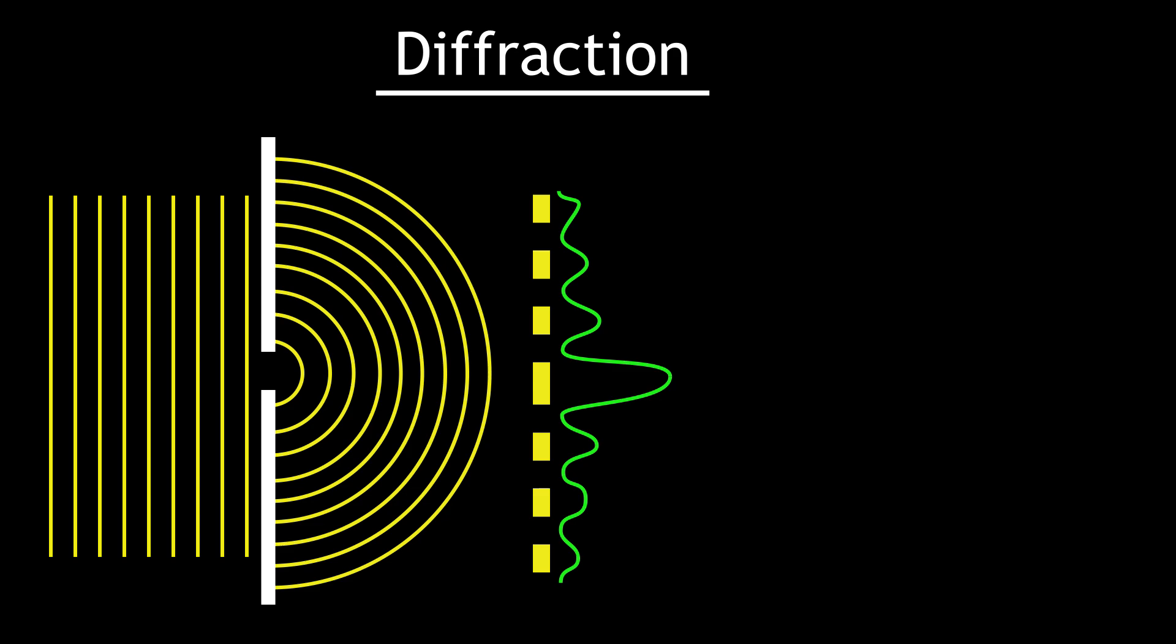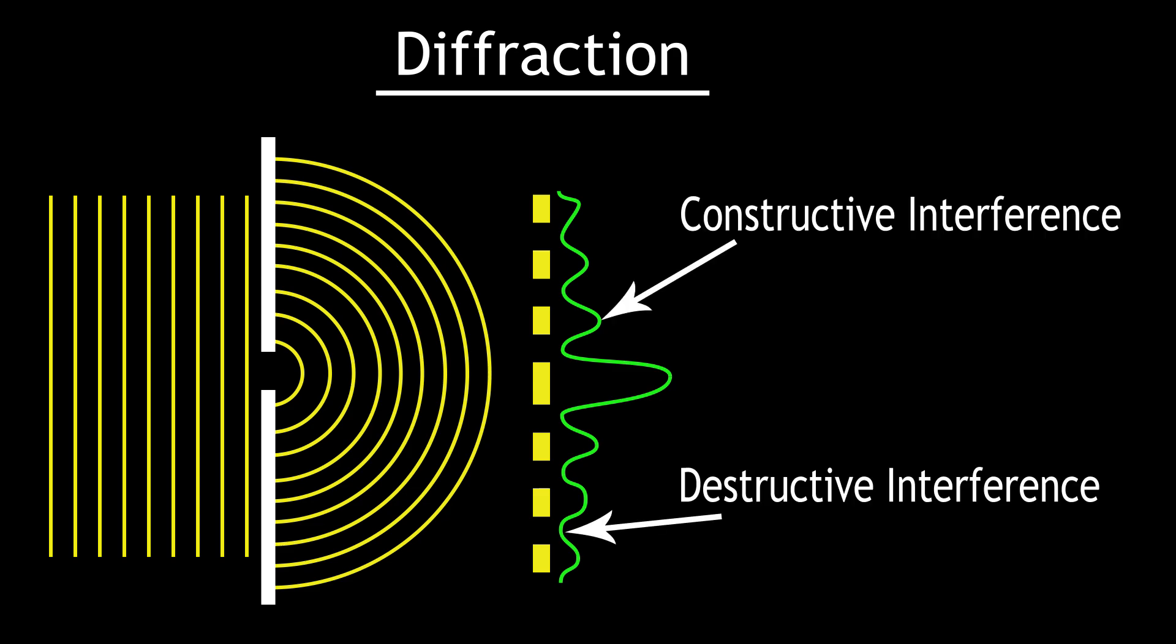When the light passes through the slit, it bends and spreads out. The smaller the slit, the more dramatic the bending. When the light reaches the screen, it interferes with itself either constructively or destructively.